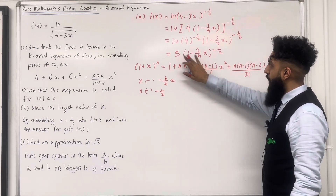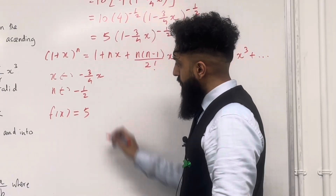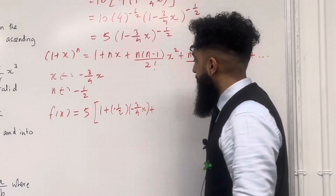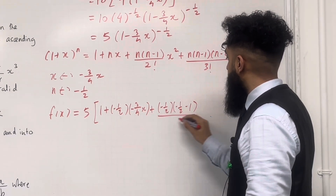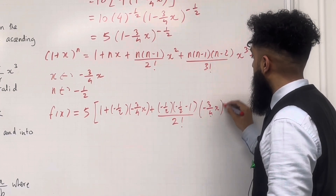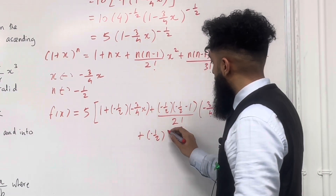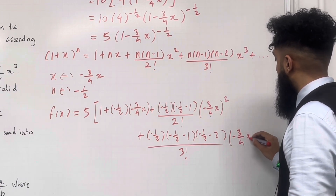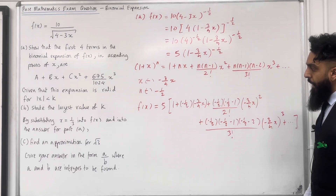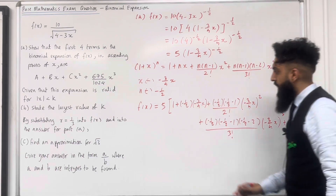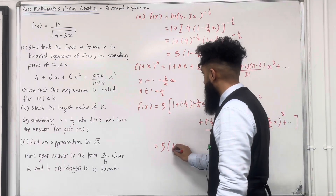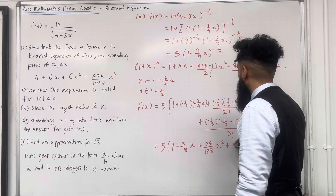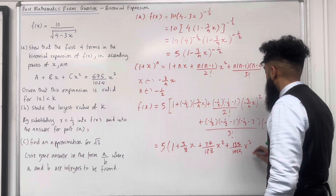So the expansion, with the 5, is f(x) equal to 5 times: 1 plus (minus a half) multiplied by (minus 3 over 4 x), plus (minus a half)(minus a half minus 1) over 2 factorial multiplied by (minus 3 over 4 x) squared, plus (minus a half)(minus a half minus 1)(minus a half minus 2) over 3 factorial multiplied by (minus 3 over 4 x) cubed, plus dot dot dot. Simplifying all the terms inside the square bracket, I get 5 times (1 plus 3 over 8 x plus 27 over 128 x squared plus 135 over 1024 x cubed plus dot dot dot).